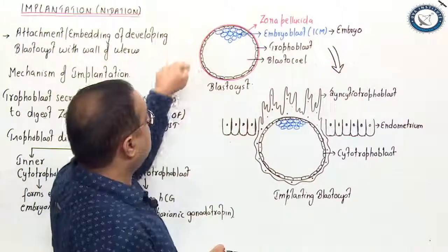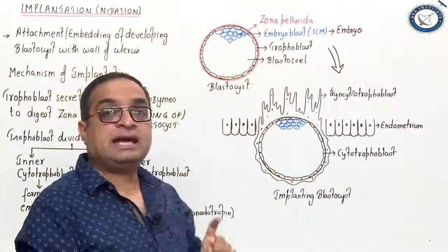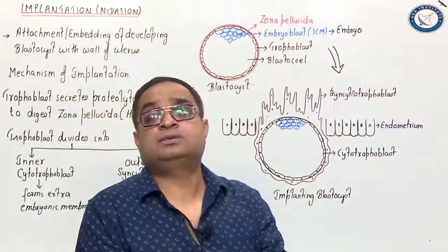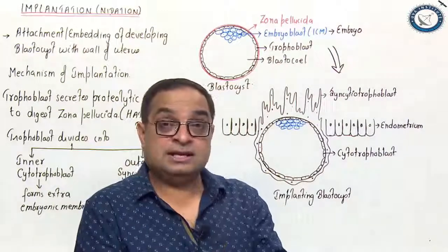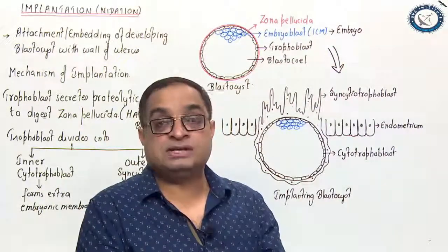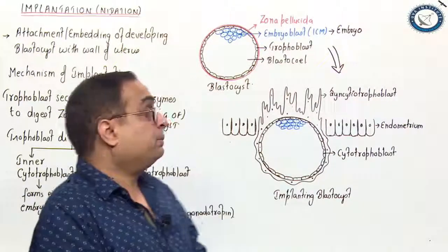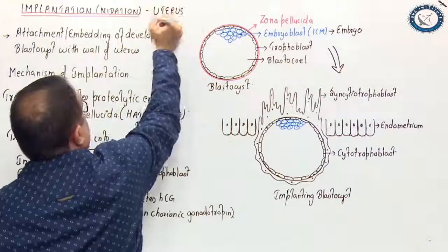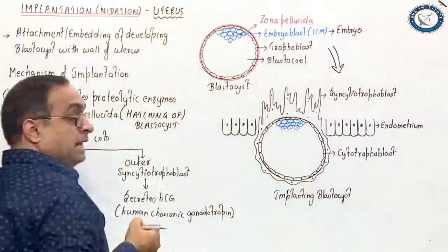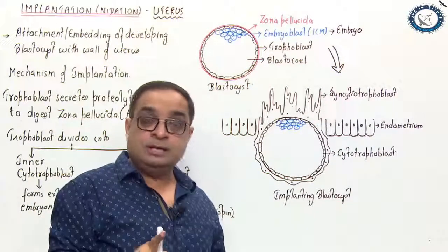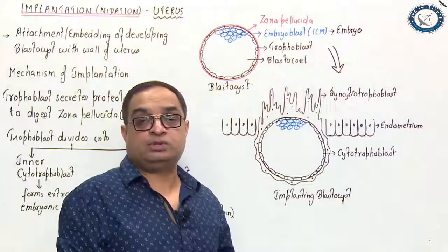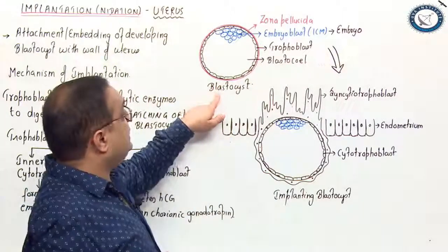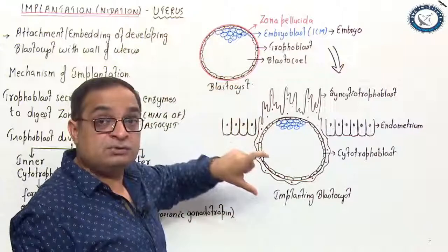When the zona pellucida dissolves, this structure can attach with the wall of the uterus. The trophoblast cells are very sticky and can attach to any maternal tissue. Zona pellucida ensures that implantation happens at the proper site, which is the uterus. The uterus is designed for implantation. If zona pellucida dissolves in the fallopian tube, it results in a very dangerous situation — tubal pregnancy, which is a type of ectopic pregnancy.